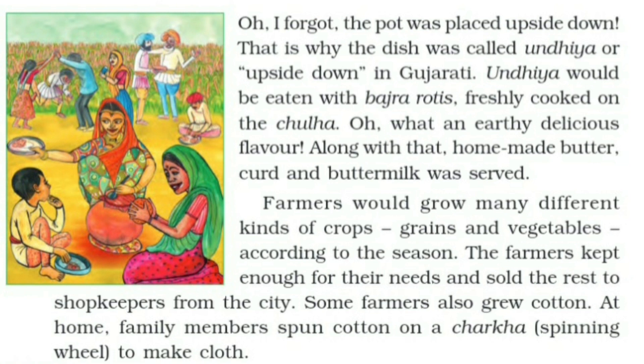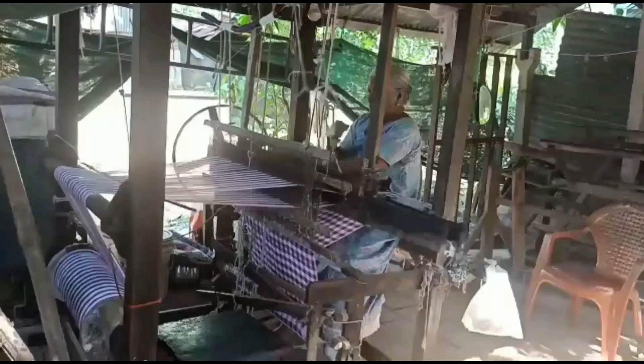'Farmers would grow many different kinds of crops, grains, and vegetables according to the season. The farmers kept enough for their needs and sold the rest to shopkeepers from the city. Some farmers also grew cotton. At home, family members spun cotton on the charka.' Charka is a spinning wheel used to make cloth.